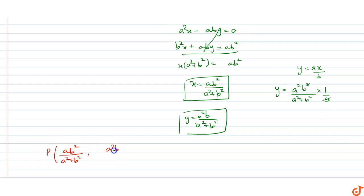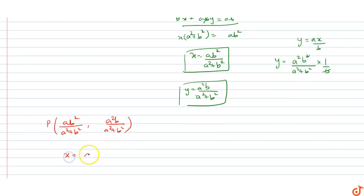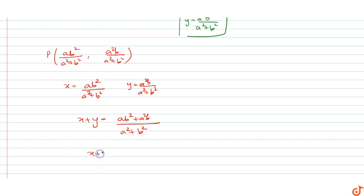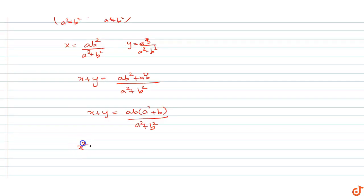So the coordinates of point P are (ab²/(a² + b²), a²b/(a² + b²)). Now if we add x plus y, we get ab² plus a²b upon a² plus b², which equals ab(a plus b)/(a² plus b²).